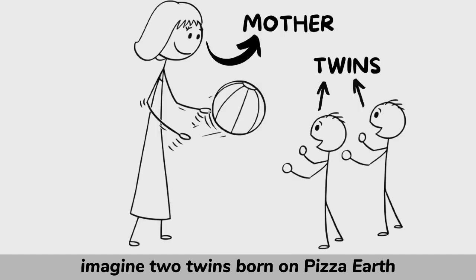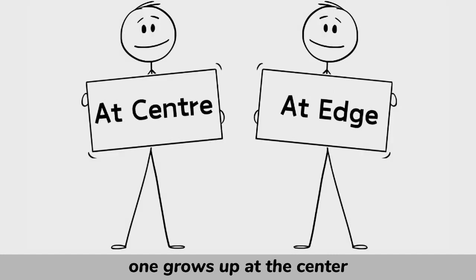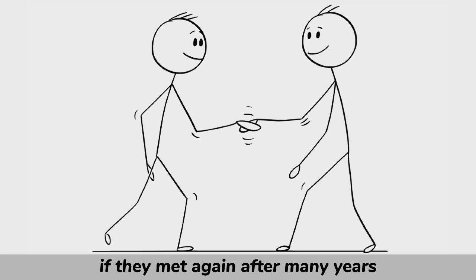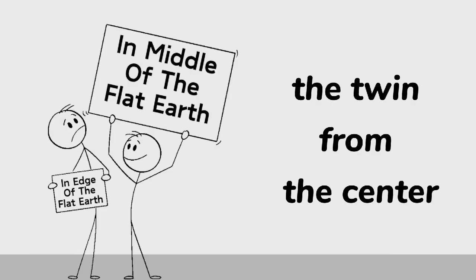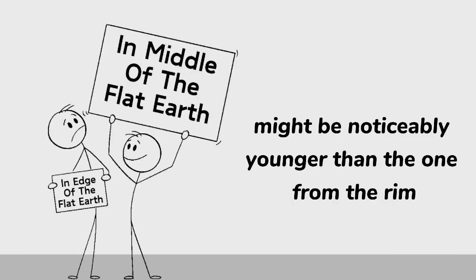Imagine two twins born on pizza Earth. One grows up at the center and the other at the fast-moving edge. If they met again after many years, the twin from the center might be noticeably younger than the one from the rim.